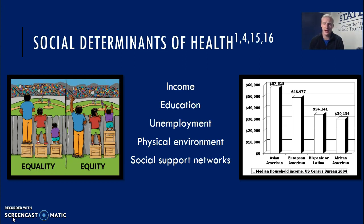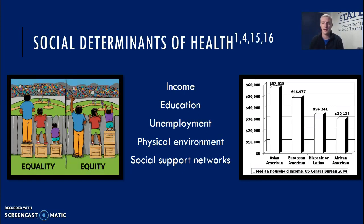If we look at the social determinants of health, income, education, unemployment, physical environment, and social support networks all come into play in regards to what sets someone up to have a gap. If we look at the pay scale on the right, Black Americans earn almost $20,000 less than their white counterparts. This is similar to gender gaps where women typically earn less than men.